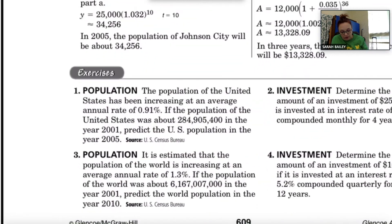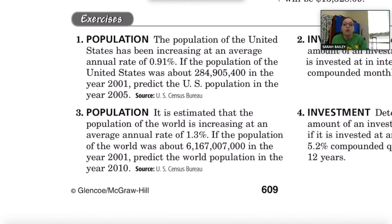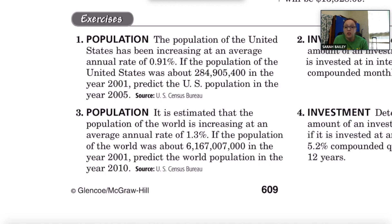All of the examples on this page are examples of exponential growth. Let's look at a problem together. Number one talks about population: the population of the United States has been increasing at an average annual rate of 0.91%. If the population was about 284,905,400 in the year 2001, predict the U.S. population in the year 2005.